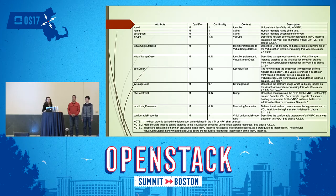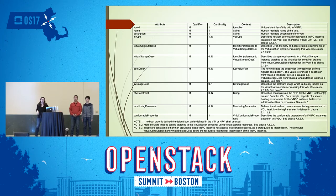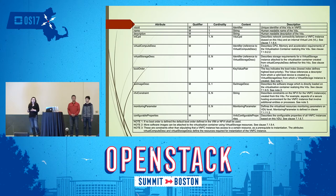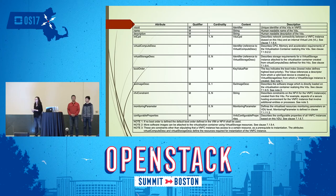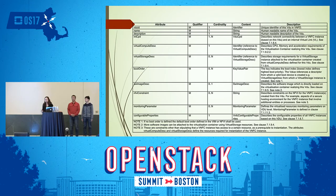A virtual deployment unit described by TOSCA NFV is not separate — for each unit we have compute, network, storage, dependencies, and relationships all together. We need tight collaboration and better support from the OpenStack world to help the orchestrator and VNF manager do their job. That's where Senlin can provide. Senlin is a clustering service that provides fine-grained operations to operate different resources — create, delete, resize, reboot — on a cluster or group of VMs.